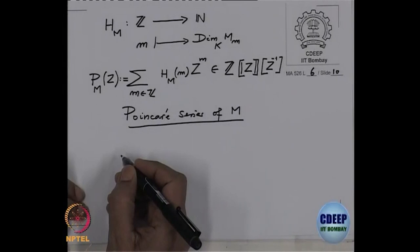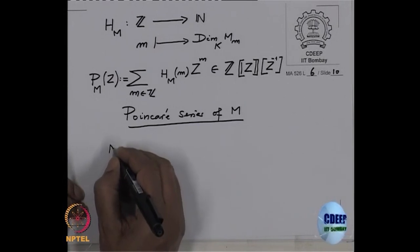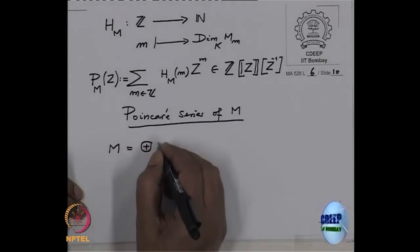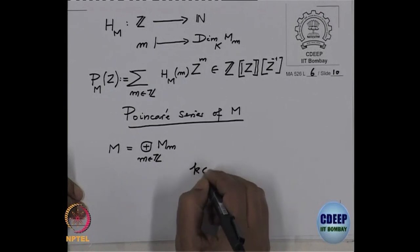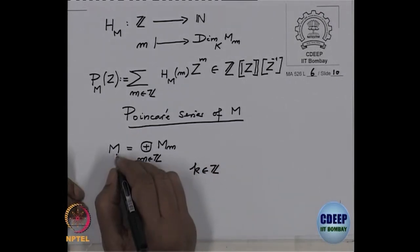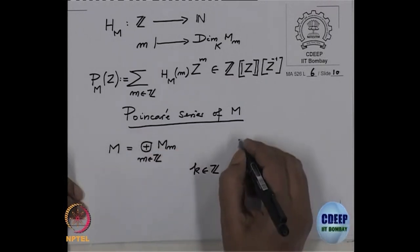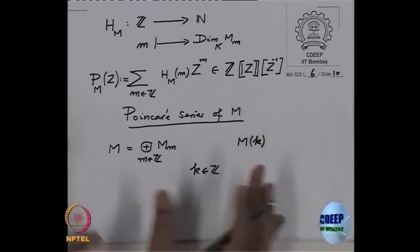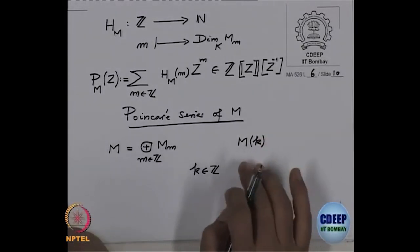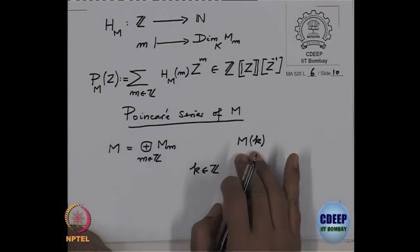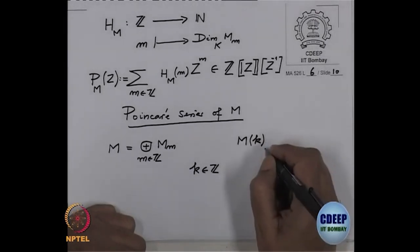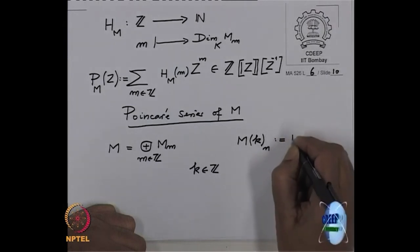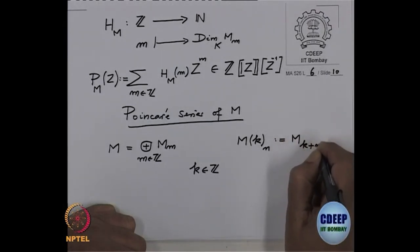Okay, so it's easy to see some first easy remarks. So suppose I have a graded module M, and suppose I have an integer K. From this module I want to get a new module that I want to write as M(K). This is a twist. To define this graded module, the homogeneous components of degree N are by definition M_{K+N}. So I have shifted.